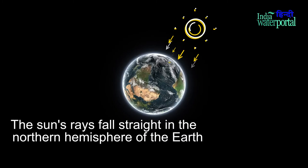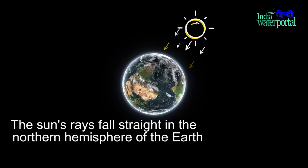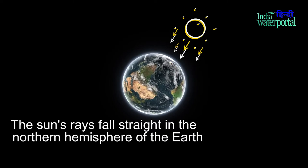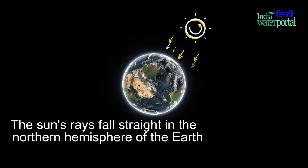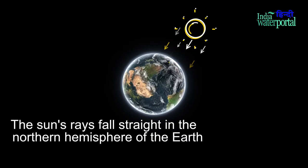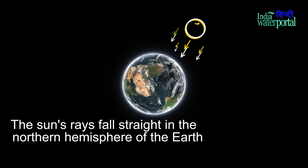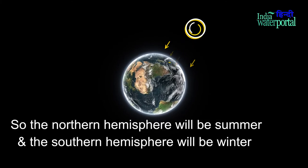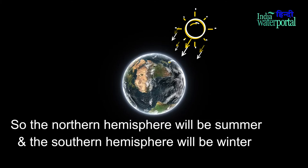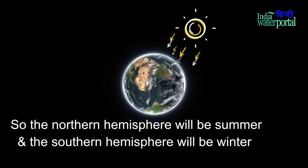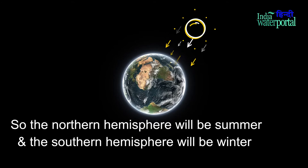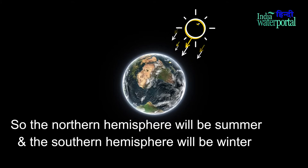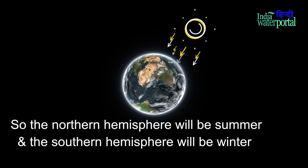The sun rays fall straight in the northern hemisphere of the Earth. So, the northern hemisphere will be in summer and the southern hemisphere will be in winter.